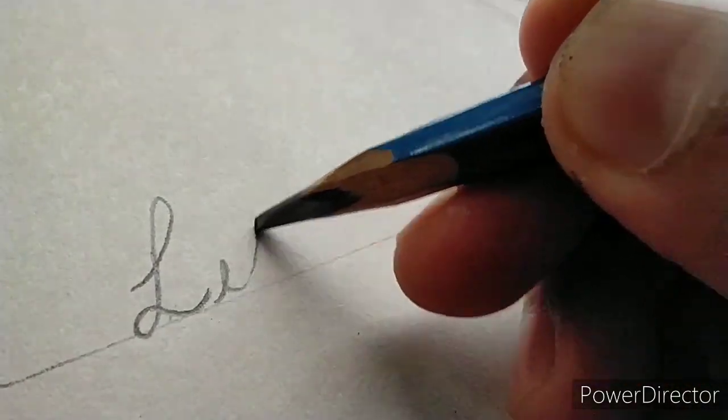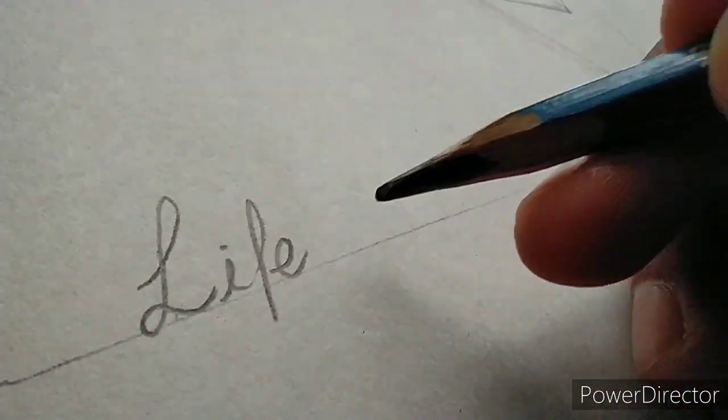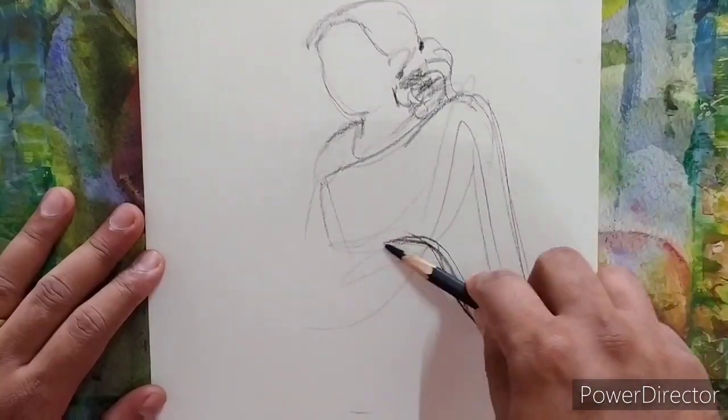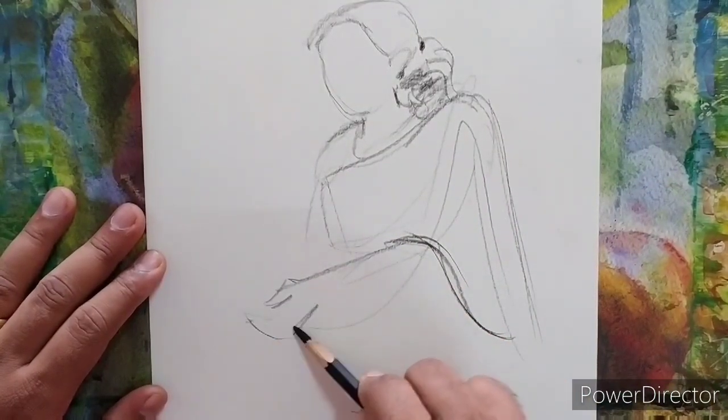If you can write clearly with a pencil, it means that you have practiced enough for it. Similarly to draw fluid lines, we need to practice.